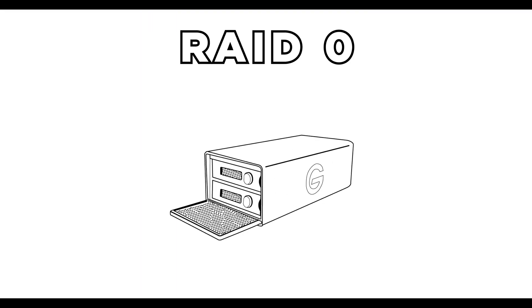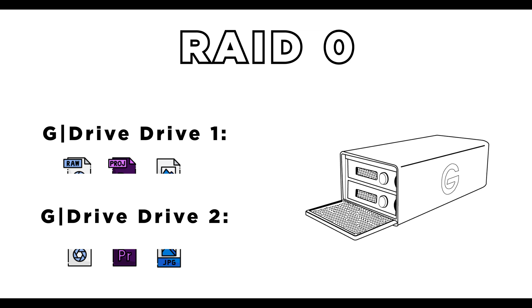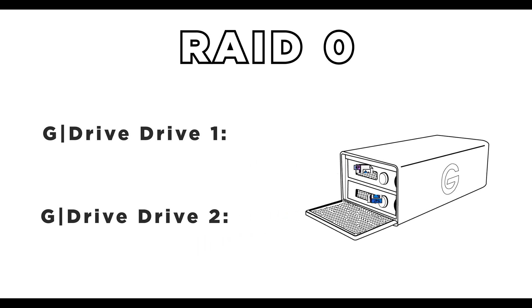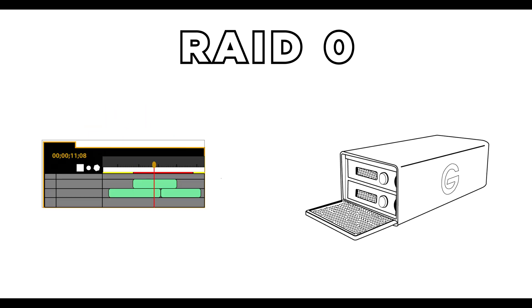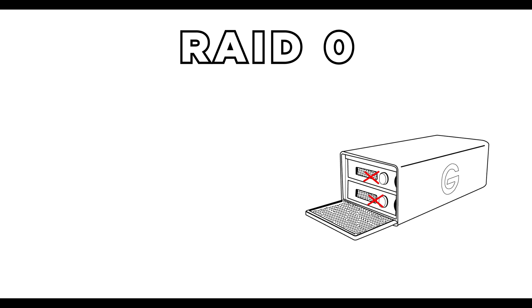RAID 0, or Striped. This format distributes different parts of the data into several drives, giving you the maximum speed. This is specifically used in editing content because the data is distributed without redundancy. If one drive fails, all data will be lost.